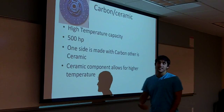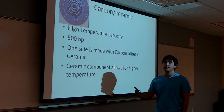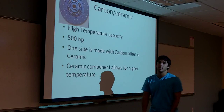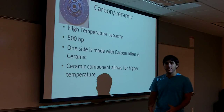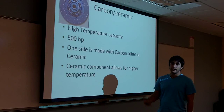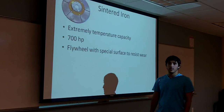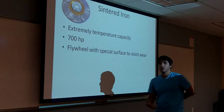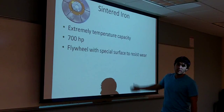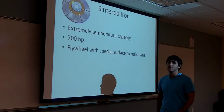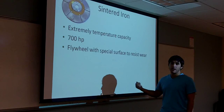Carbon ceramic is nice because it has a much higher heat range — it can go up to 500 degrees Celsius — mainly because one side is ceramic so it can withstand more heat. Like Kevlar, it is also rated up to 500 horsepower. Cinder iron is the strongest, but the problem is it is so rough that a normal flywheel would be torn to shreds, requiring a very special flywheel surface.